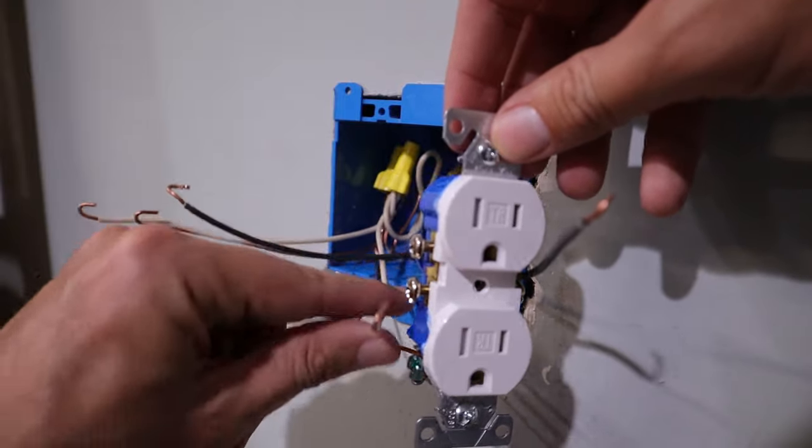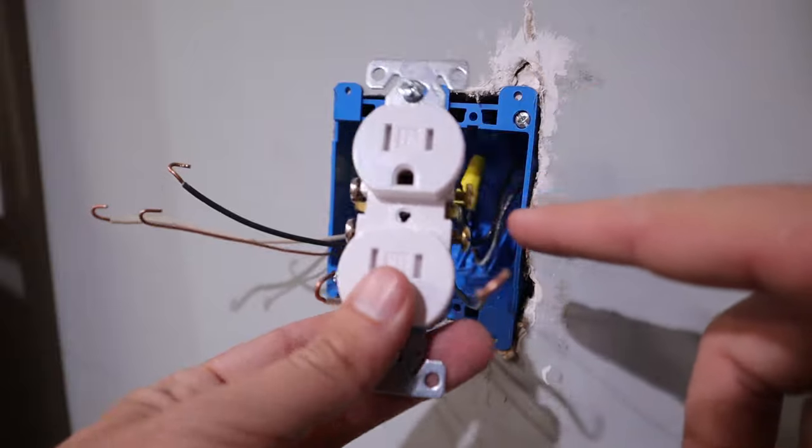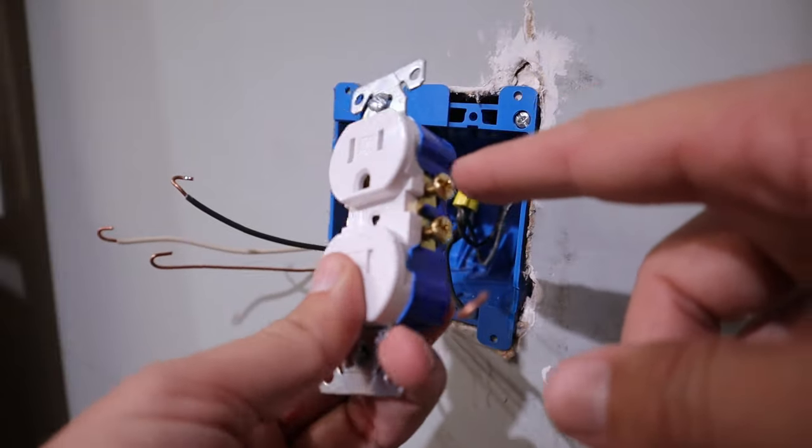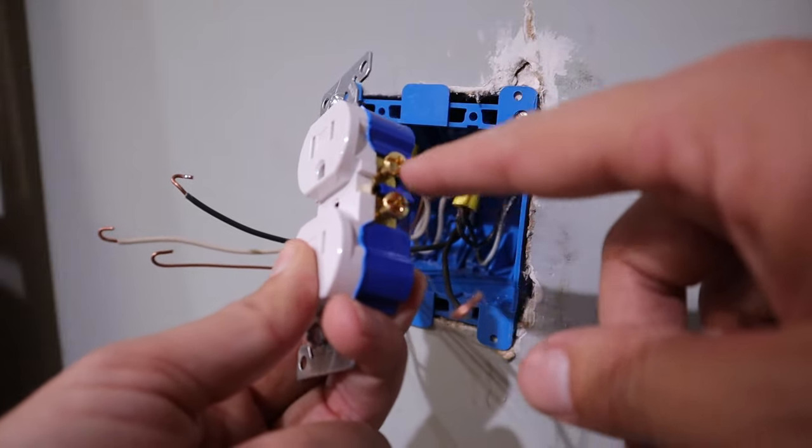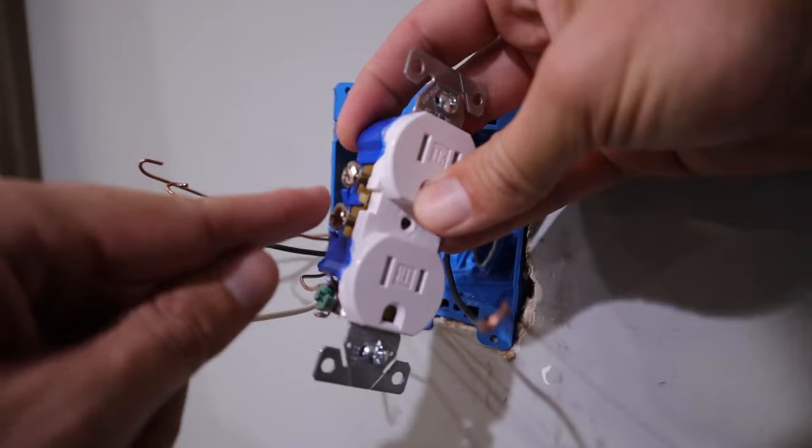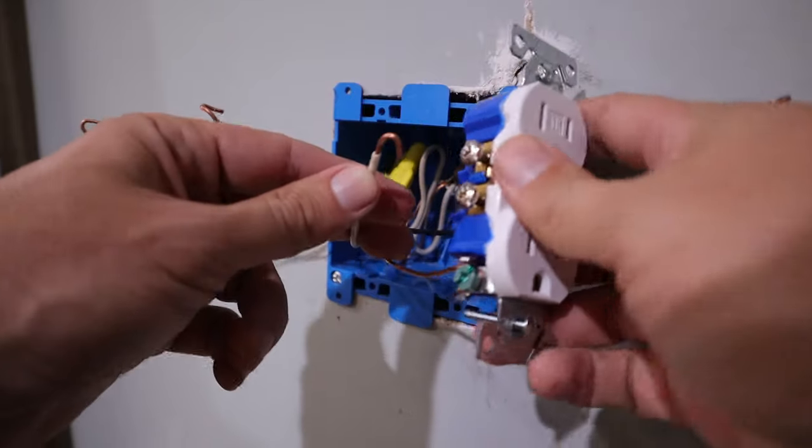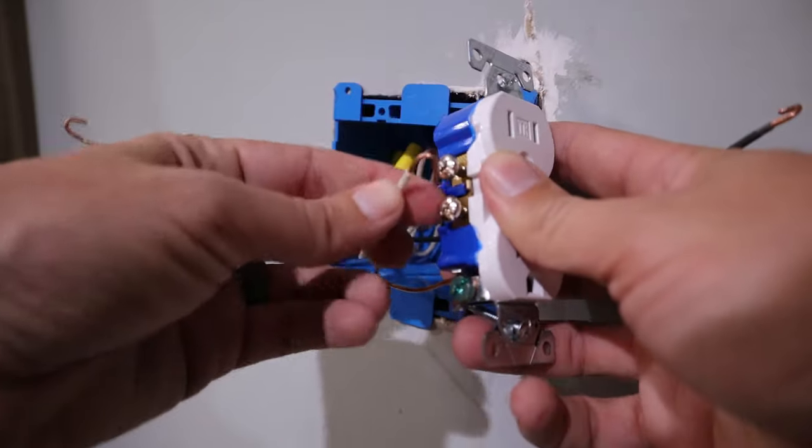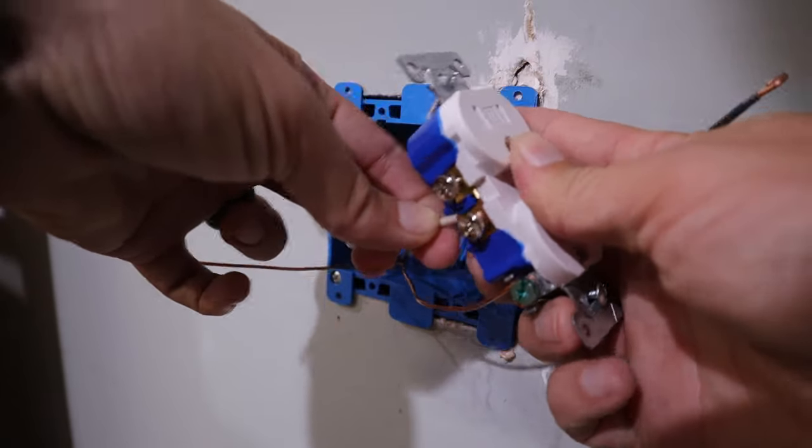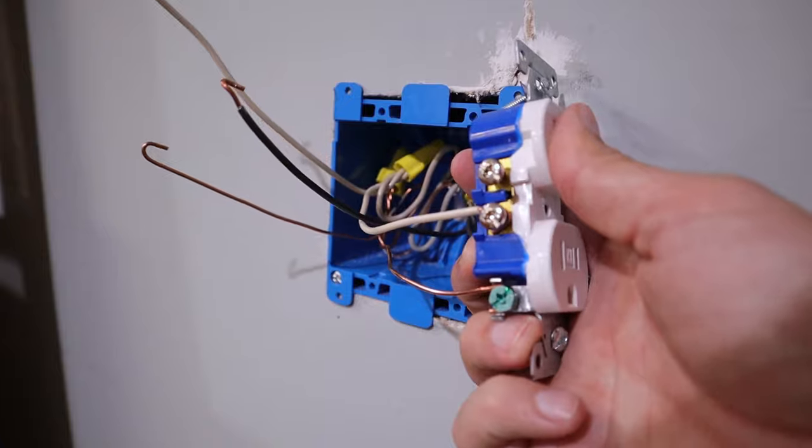And so now I'm ready to hook up my white neutral wire. Now an outlet has two sides, of course, with two different colored terminals. On this right side, this is going to be the hot side. These are brass colored screws. And the neutral is going to go over here on these more silver colored screws. So I'm just going to take that white neutral wire and much like I did with the ground wire, I'm going to loop it around in a clockwise direction and then tighten it down.